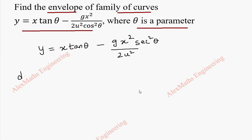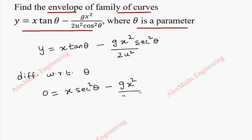Now we are going to differentiate this equation with respect to theta. Other than theta, the remaining terms are constant. So the differentiation of y is 0. x is a constant multiplied with tan theta, so keep the constant as it is — tan theta differentiation is secant squared theta. Again, minus g x squared by 2u squared is a constant, kept as it is. Differentiation of secant squared theta is 2 secant theta, and by chain rule, secant theta differentiation is secant theta times tan theta.